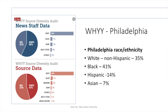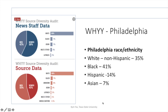Think about how the people who work at WHYY — the people on air, used as sources, telling the story of their community — are predominantly white. Now look at who makes up Philadelphia: 35% white, 41% Black, 14% Hispanic, 7% Asian. So it is a concern as we think about who we're talking to and making sure we're making a concerted effort to get into our community and develop sources across the ethnic and racial spectrum, the gender spectrum, and occupation.